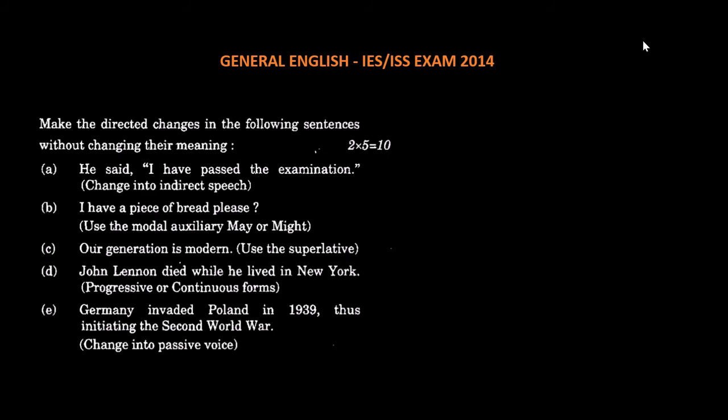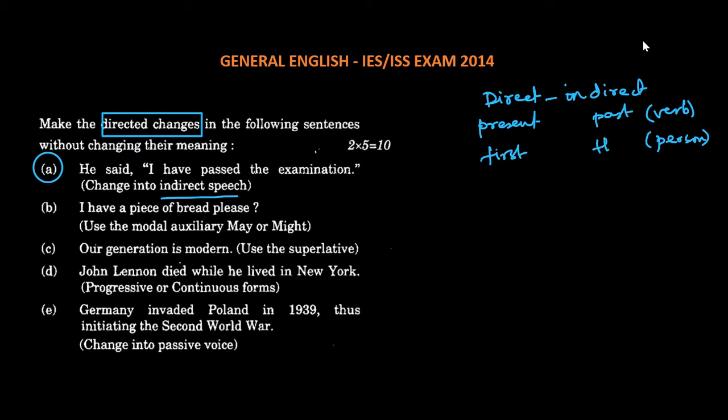Next, we have a few sentences which are given to us, and we have to make changes as per the instructions in each sentence. So the first one says change into indirect speech. Now when we change from direct to indirect, that means we have to change two things. One is the verb, which is from present to past tense. First. And second is the person, from first to third person.